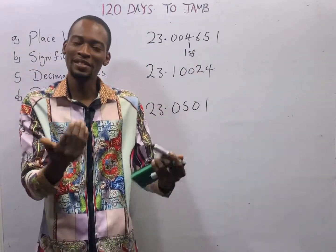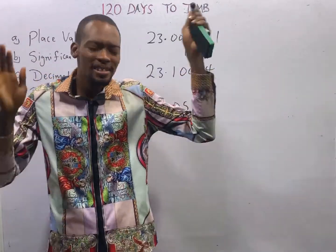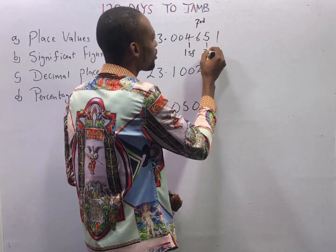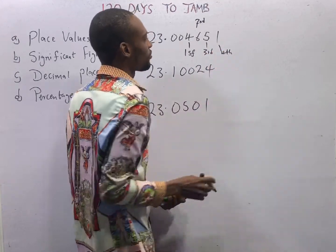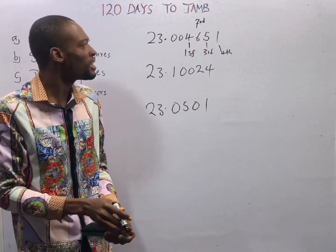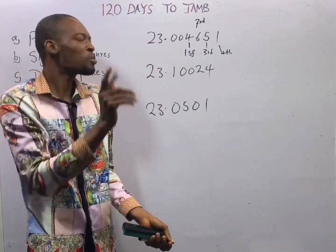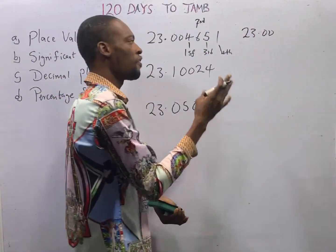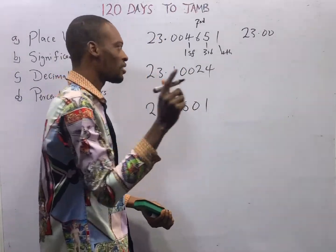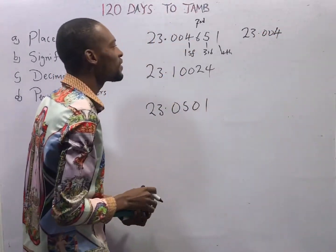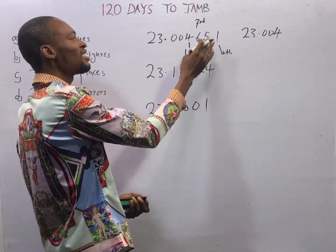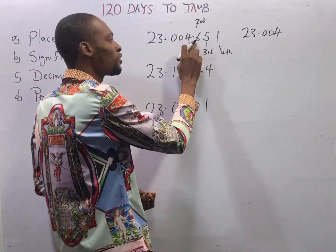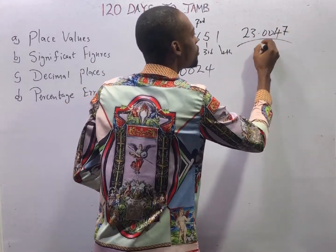After you have found the first significant figure, any other number is second, third, fourth, and so on. So this is the second, this is the third, this is the fourth. If I ask you to approximate this number to two significant figures, the first significant figure is 4 — the first number that is not zero. The second significant figure is 6. But the number after 6 is bigger than 4 — it is 5 — so we do our normal rounding. Take 1 from here and round 6 up to 7. So here becomes 7. That is two significant figures.